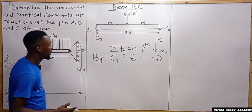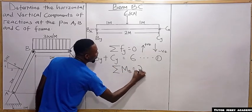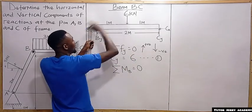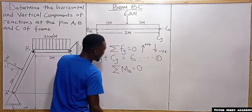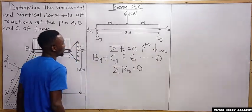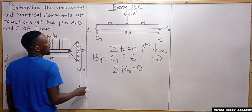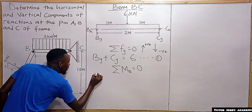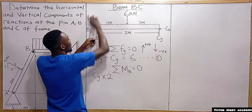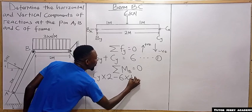Taking the summation of moments about point B equal to zero, with anti-clockwise moments positive and clockwise moments negative: the upward force at C gives an anti-clockwise moment, so we have positive C subscript y multiplied by 2. The 6 kN downward force gives a clockwise moment, so we have negative 6 multiplied by 1, equals zero.